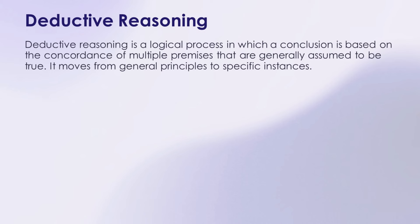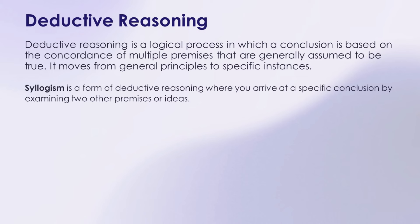For instance, if you know that all humans are mortal, and Socrates is a human, you can deduce that Socrates is mortal. A common form of deductive reasoning is called a syllogism. This is where you take two premises and use them to arrive at a specific conclusion.